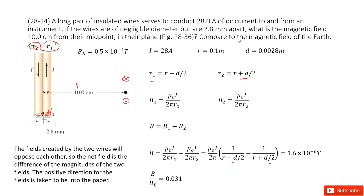The second part asks you to compare to the magnetic field of Earth. As we can see, the Earth's magnetic field is a constant BE. And then we use B net over BE, we get the ratio is 0.031. This is 3% of the Earth's magnetic field. Thank you.